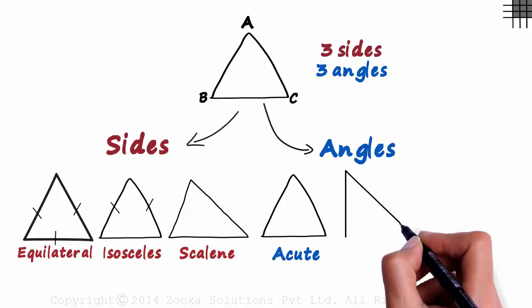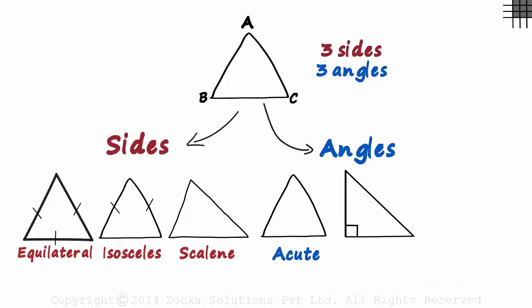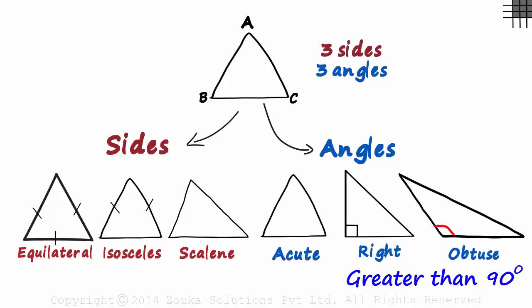If one angle in a triangle is 90 degrees, it will be called a right triangle. And if we have a triangle like this one, in which one angle is greater than 90 degrees, then it's called an obtuse triangle.